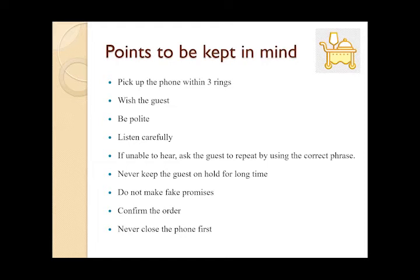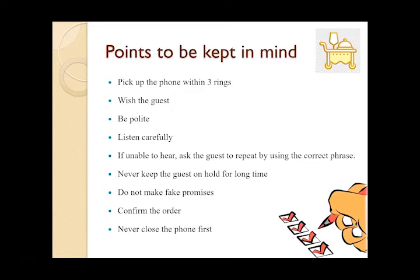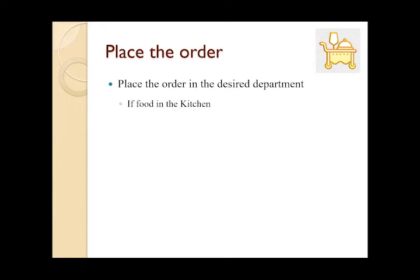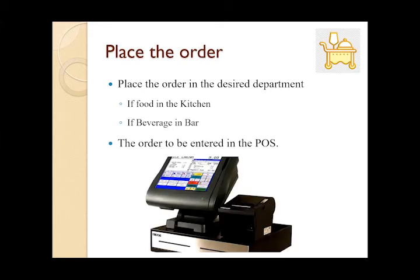This acts as a checklist for the RSOT while taking the order. Once the order is taken, the RSOT places the order in the desired department. If it's food, the order is placed in the kitchen; if it's a beverage, the order is placed in the bar. The order is also entered in the Point of Sale system, that is Micros, and the bill is kept ready.